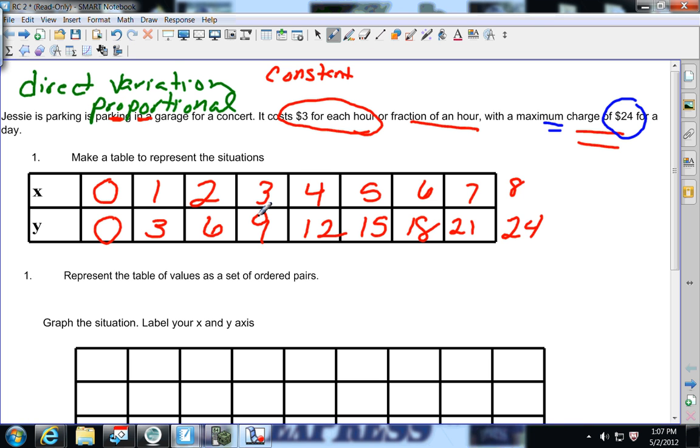If I wanted to write these as ordered pairs, how do I represent that? What is this one? Zero zero. So it's proportional, it goes through zero zero. What's my next ordered pair? One three, two six, three nine, four twelve. All I'm doing is writing the numbers up here in the table as an ordered pair. It's just showing you that this can be represented like here in ordered pairs.